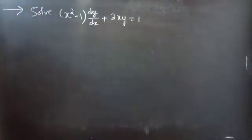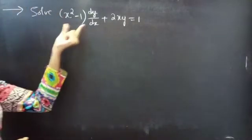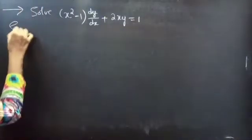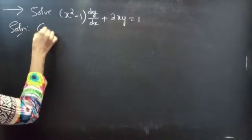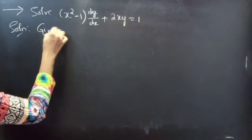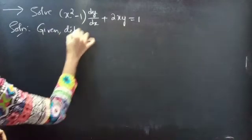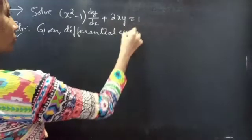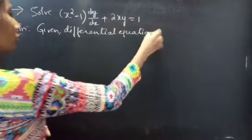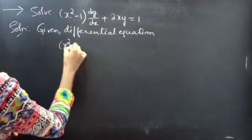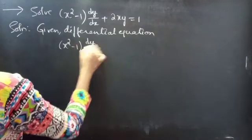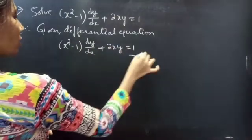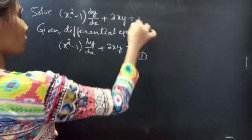Problem. Solve: (x² - 1) · dy/dx + 2xy = 1. Consider the given equation as equation 1.